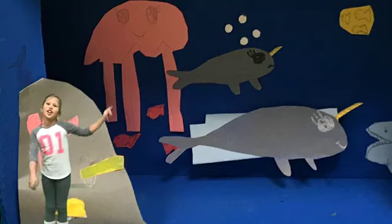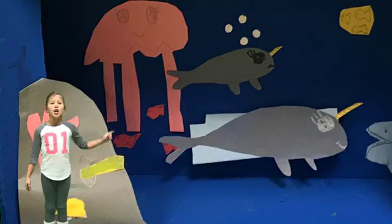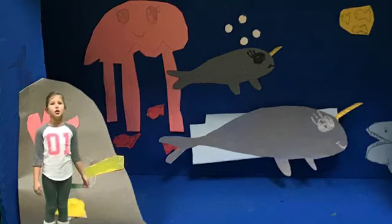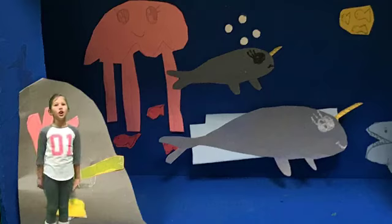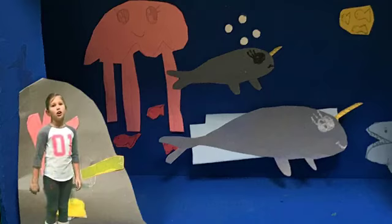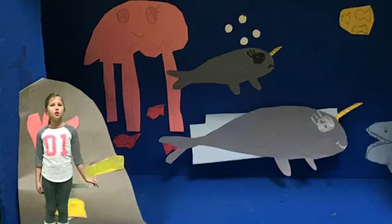Narwhals look like underwater unicorns. Narwhals feed on green land, the grayish color camouflages in the Arctic waters. They call the narwhal the unicorn of the sea.